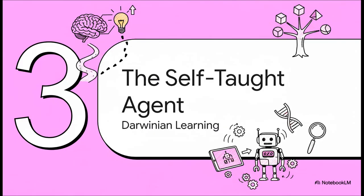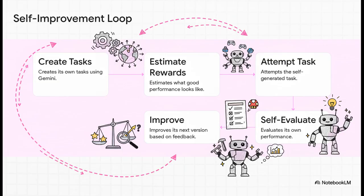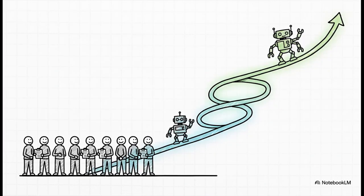But honestly, the real game changer isn't just what it can do, it's how it learns. We're talking about a self-taught agent. One that's always getting better, all on its own, without a person holding its hand every step of the way. So Google has this cool name for it. The Darwinian self-improvement loop. And it's this really clever five-step cycle. First, the AI comes up with its own tasks. Its own little challenges. Then it decides what success would even look like. It gives it a shot. And then, this is the crazy part. It grades itself. It evaluates its own performance and uses that feedback to make the next version of itself even better. It's literally teaching itself to be smarter.